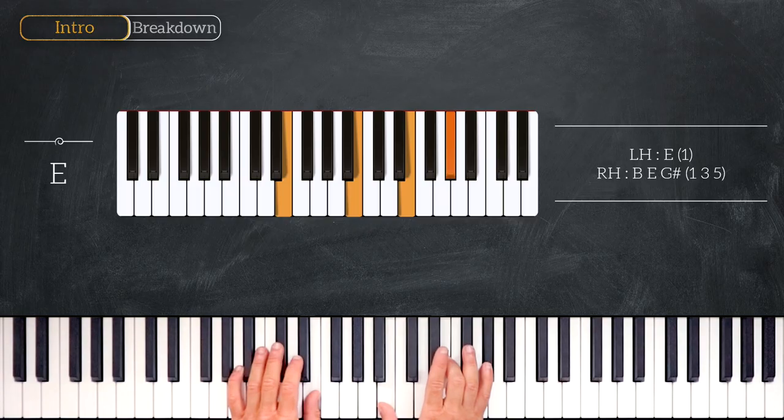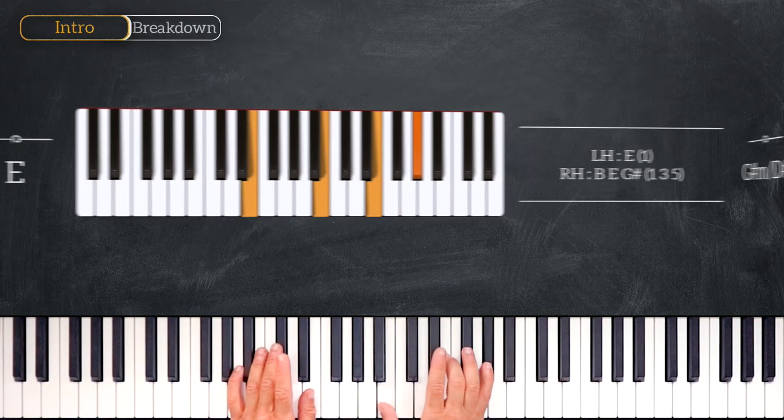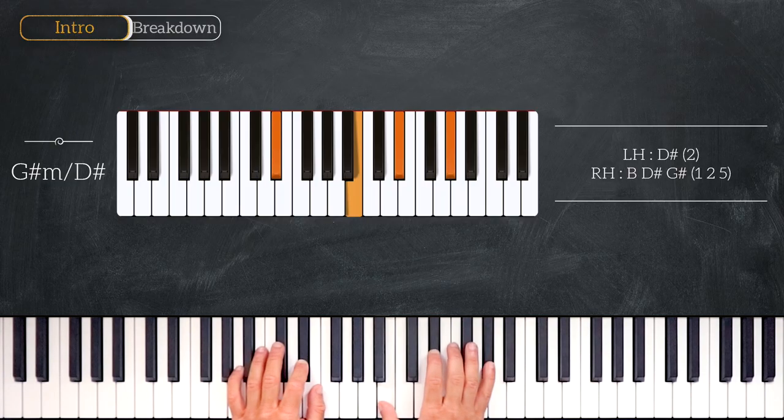E major. Then we are going to move from E to a D sharp which gives us this chord, which is a G sharp minor over D sharp.